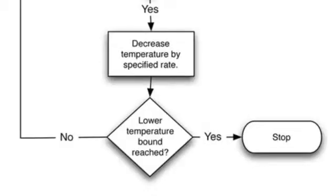Then we decrease the temperature by the specified rate. We check and see if the lower temperature bound has been reached. Once we've reached the lower temperature bound, we are done with this particular iteration and we can stop.